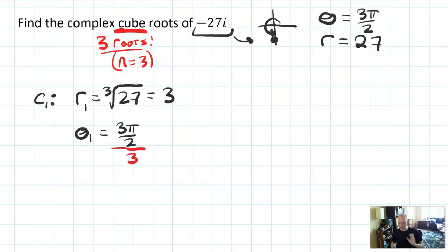Theta of that root is going to be 3π over 2 divided by 3. Why am I doing that? Because I need an angle that, when I cube it, I'm going to get 3π over 2. So I have to take that original angle and divide it by 3 to kind of reverse the process. And when I do that, I get π over 2.